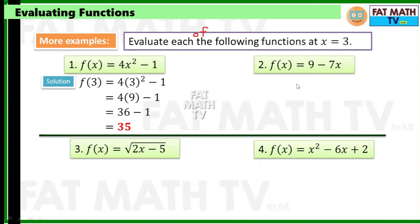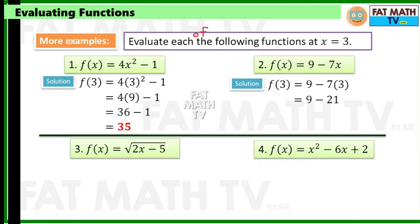You can already try numbers 2, 3, and 4 on your own as practice — these are easy items, just replace x with 3 and compute the answer. Number 2, f of x equals 9 minus 7x. Copy 9 minus 7 then replace x with 3. You have subtraction and multiplication, so do multiplication first. 7 times 3 is 21, so 9 minus 21 is negative 12. So f of x equals negative 12 at x equals 3.